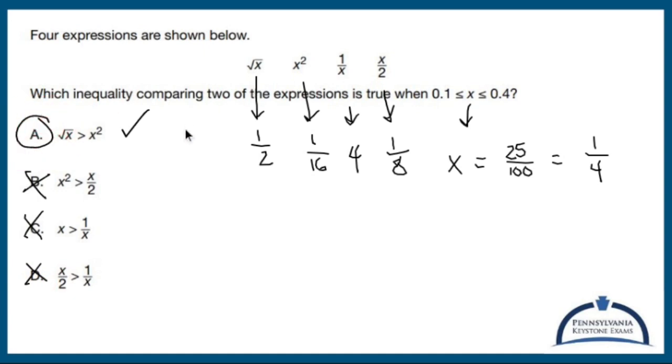I don't know if this is going to be a calculator section, but again, what I did is I chose a very friendly fraction that's in between 0.1 and 0.4. A fourth is 0.25. That allowed me to figure out each part of these and use these guys to come up with a reasonable answer, and that answer is A.